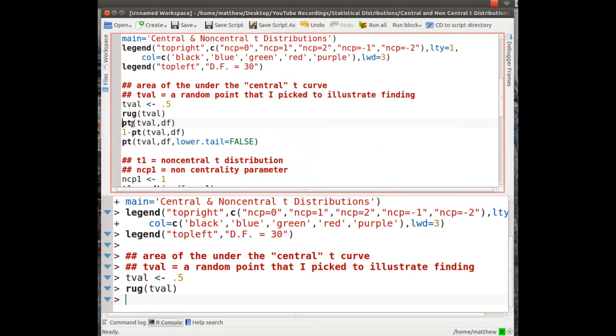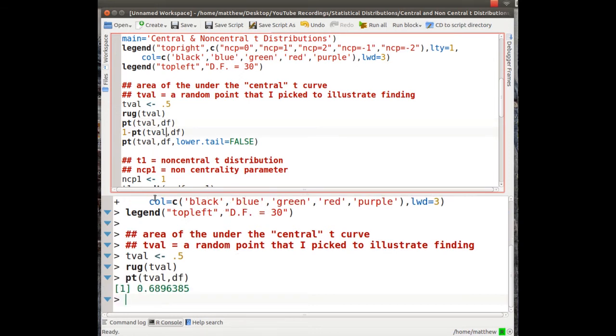And the pt function in R is the way to do it. And that's the distribution function, so it calculates the area under the curve from a specific value. And here we chose 0.5, and our degrees of freedom was defined as 30. And if we look at this, it's 0.6896 under the curve. The total area is 1, so that's 68.9 or 69% of the area left of 0.5.